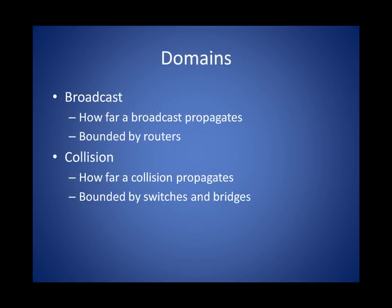Two terms that help us understand how the network operates are broadcast domain and collision domain. A collision domain describes how far a collision will propagate once it occurs — the two frames collide and the signal propagates away from the point of collision. Hubs will continue to forward collisions because they're not very bright. But bridges, switches, and routers that pay attention to MAC addresses will not forward collisions.